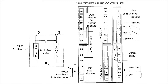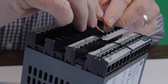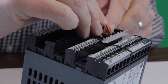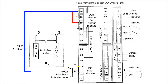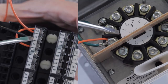In the wiring diagram that you see, you will note that we are using a Eurotherm 2404 temperature controller and a Eurotherm EA55 motorized valve actuator. First, you wire a jumper across terminals 1A and 1C of the temperature controller. Next, wire terminal 1A of the temperature controller to terminal X of the motorized valve actuator.